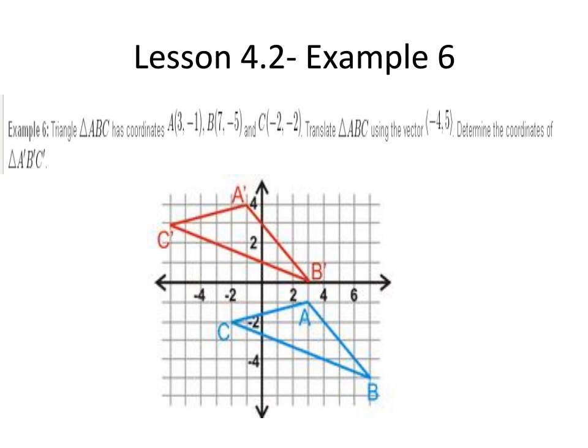Triangle ABC has coordinates A(3,-1), B(7,-5), C(-2,-2).